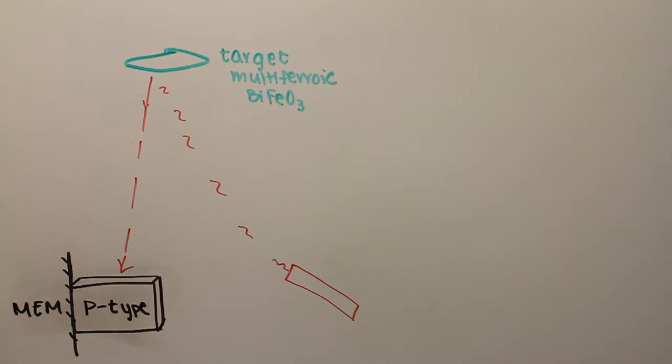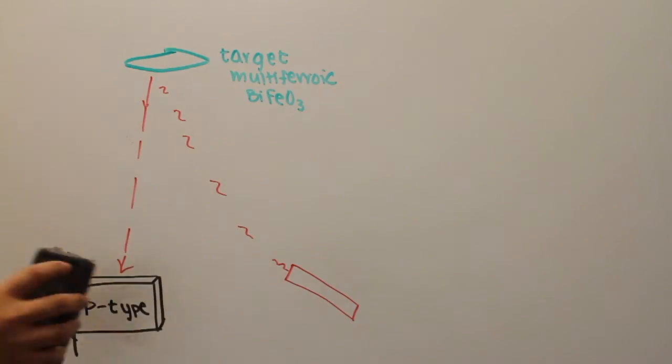Pulsed laser deposition is a form of PVD, physical vapor deposition, where pulses of a laser are fired at a target material in a vacuum to create a thin film of the target material through transportation as plasma.